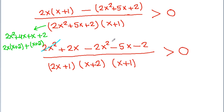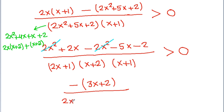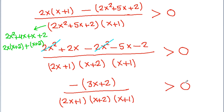The 2x² and −2x² cancel. Then 2x − 5x = −3x, leaving −3x − 2 in the numerator. Taking −1 common, we get: −(3x + 2) / [(2x + 1)(x + 2)(x + 1)] > 0, which is equivalent to (3x + 2) / [(2x + 1)(x + 2)(x + 1)] < 0.